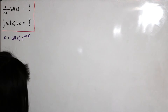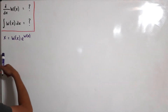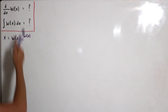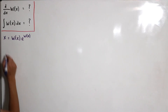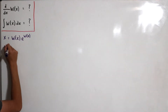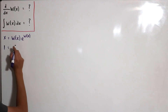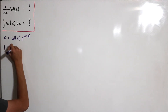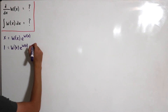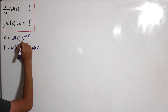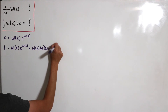Using this definition, we differentiate both sides with respect to x. The left side gives 1. On the right side we apply the product rule: the derivative is W′(x)·e^(W(x)) plus W(x) times the derivative of e^(W(x)), which is W′(x)·e^(W(x)).